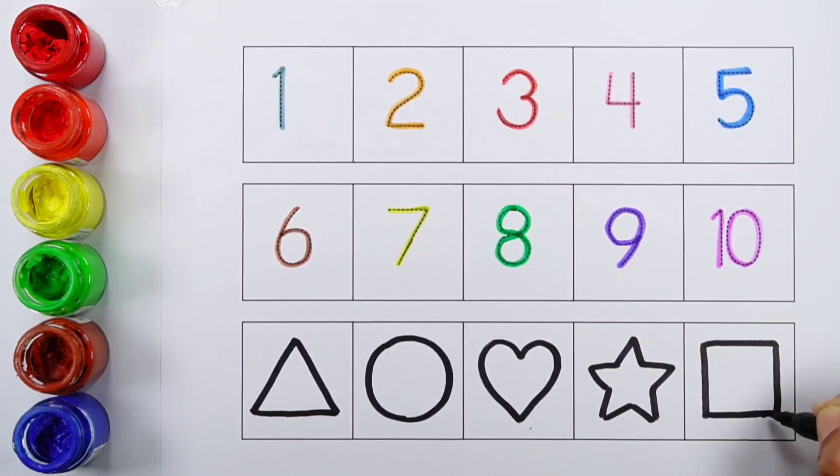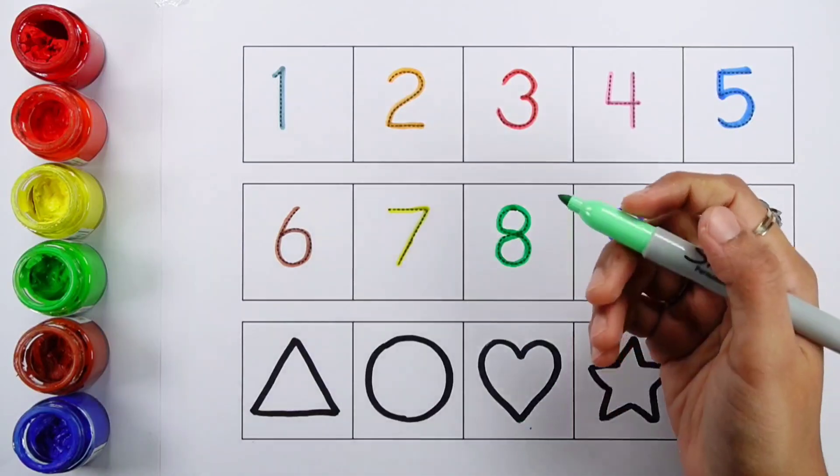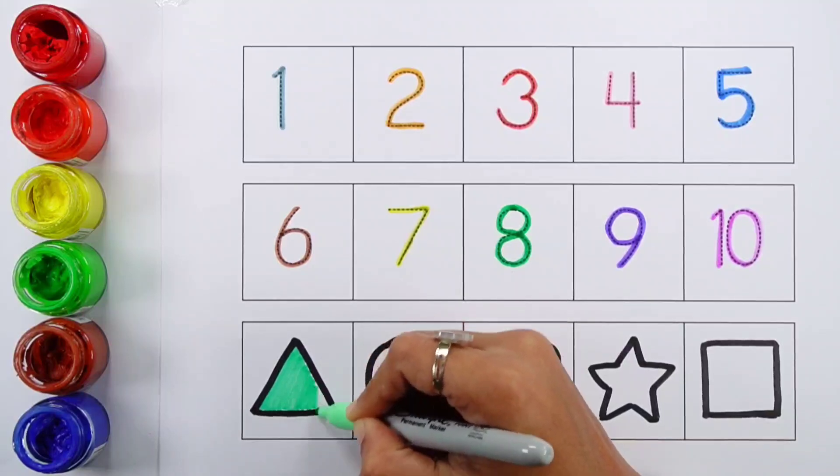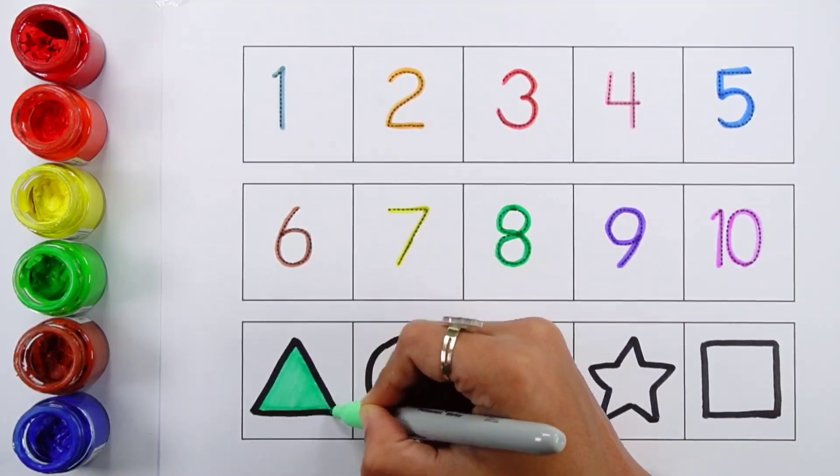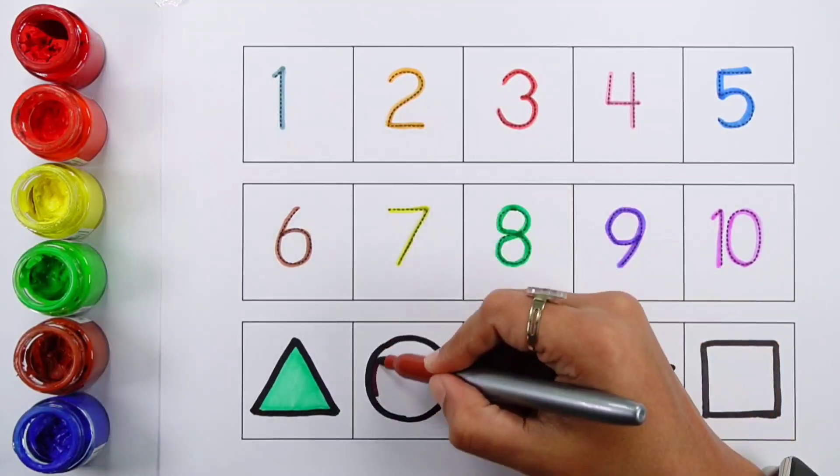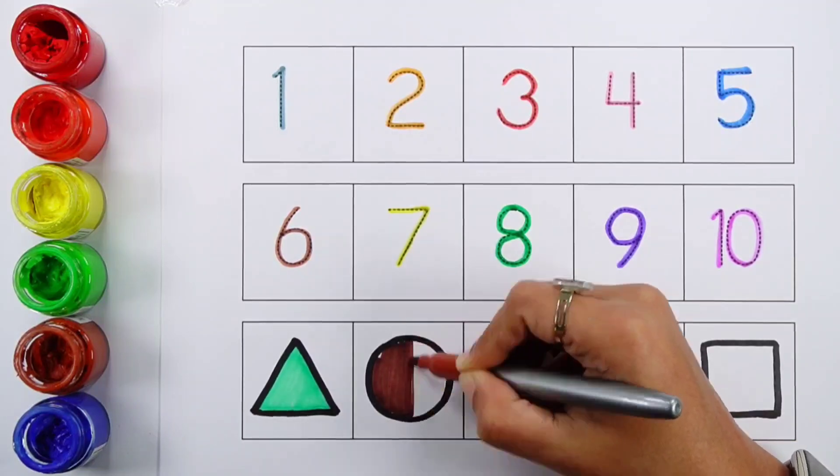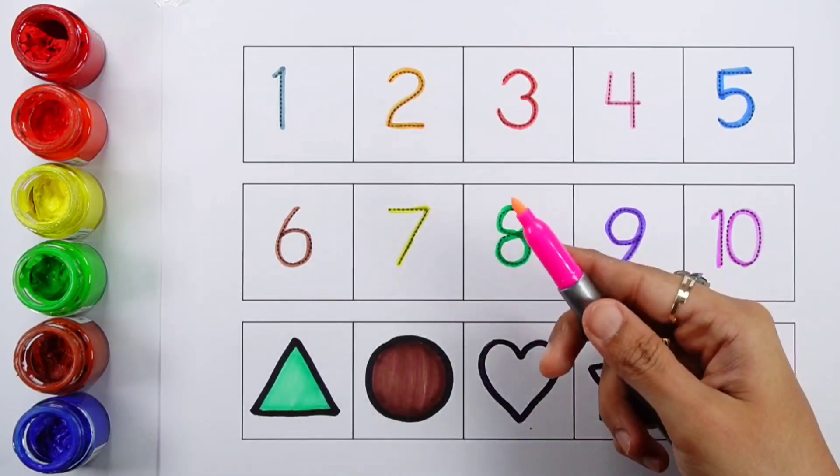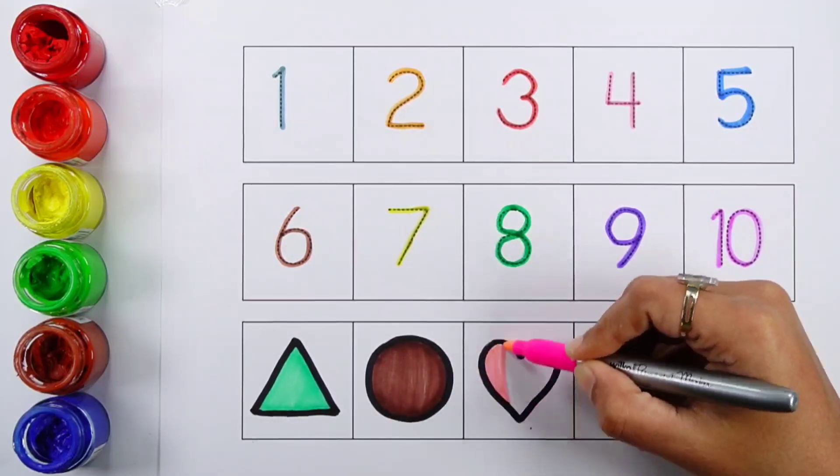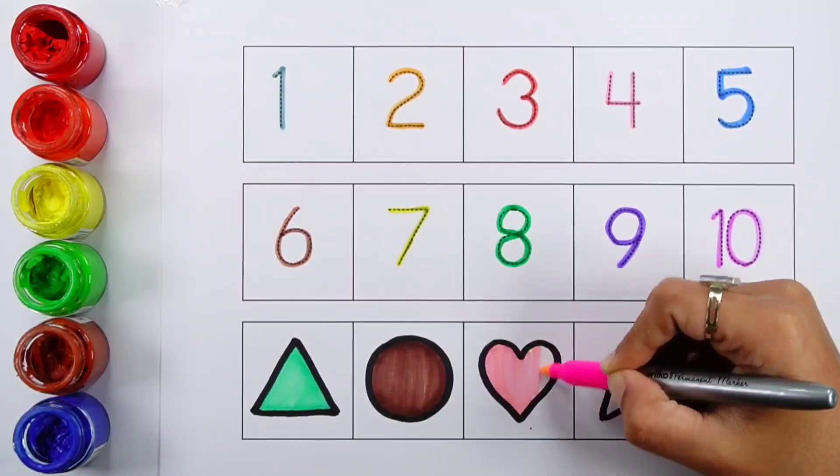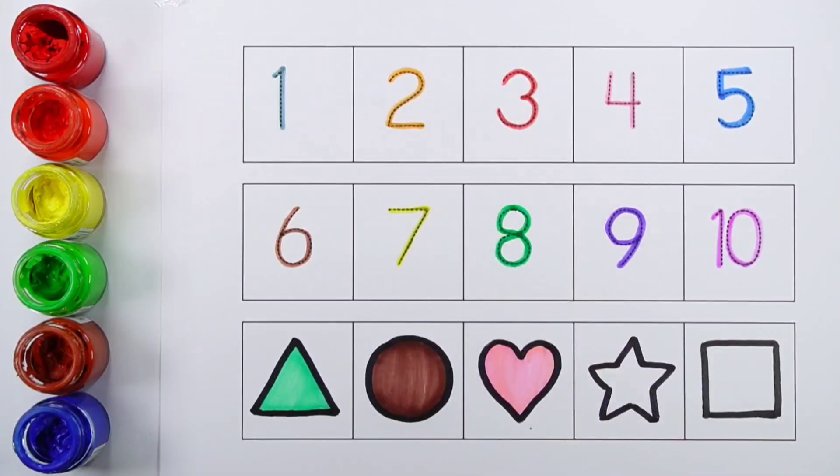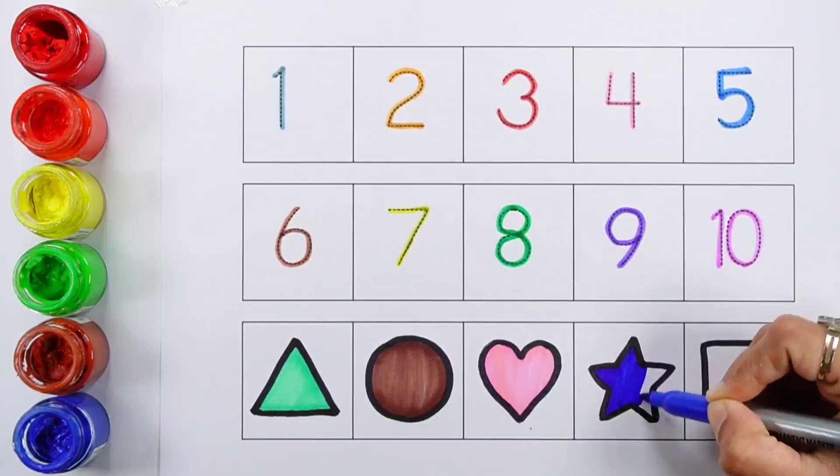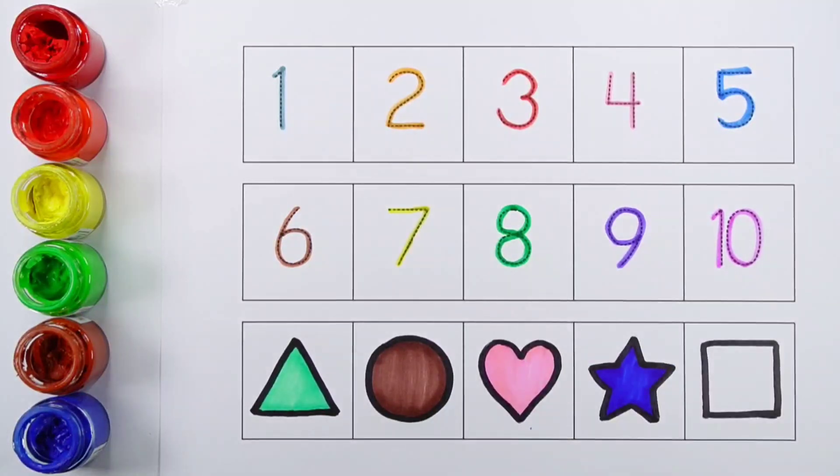Square. Pale green color. Brown color. Pink color. Dark blue color. Violet color.